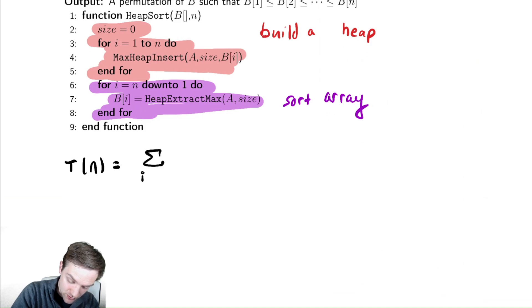First, we have a for loop that goes from 1 to n. Of, we are performing a max heap insert. So I'm just going to write that as the time it takes to insert as a function of the size of the heap.